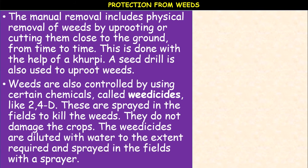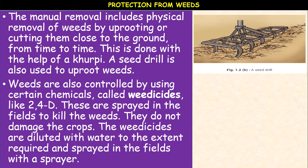Weeds are also controlled by using certain chemicals — that is the chemical method. They are called weedicides. Weedicides are chemicals. For example, 2,4-D is used to remove the dicotyledonous weeds; this chemical is sprayed in the fields to kill the weeds. They do not damage the crops. The weedicides are diluted with water to the extent required and sprayed in the field with a sprayer, or in the form of powder.